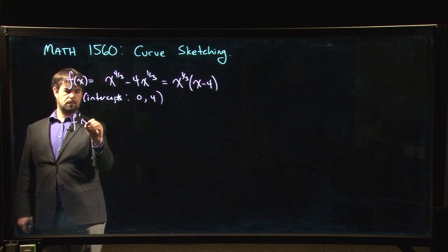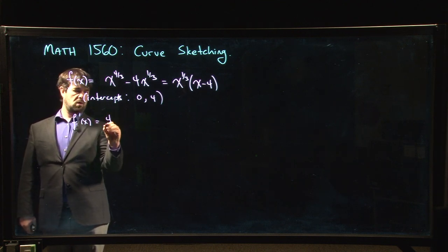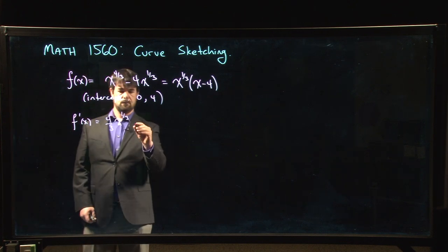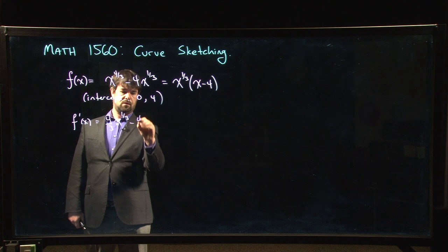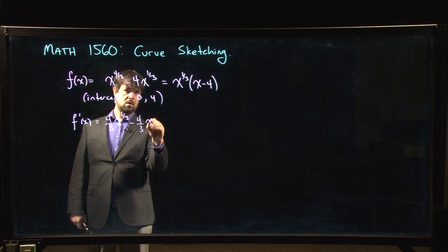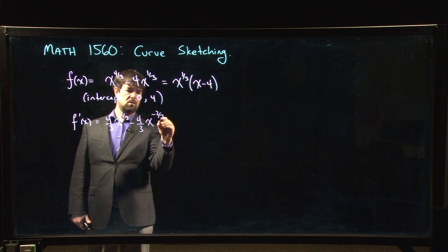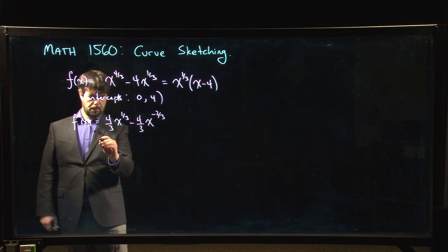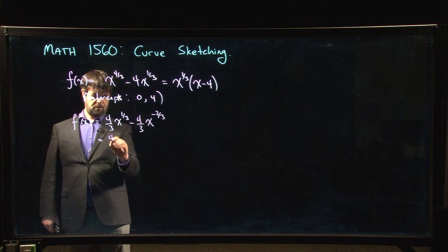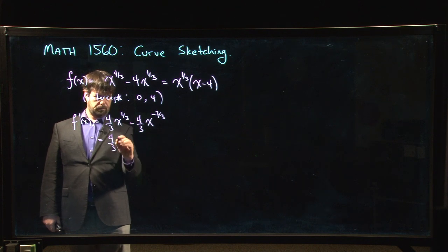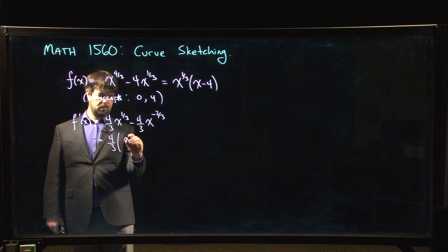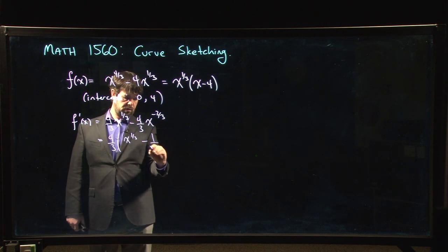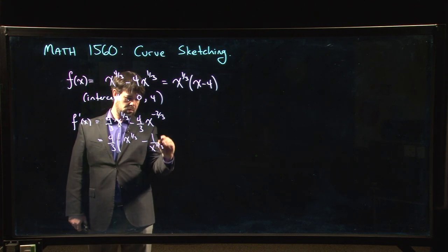All right, first derivative. We get 4 over 3 x to the 1 over 3 minus 4 over 3 x to the minus 2 over 3. Okay, so let's factor out the 4 thirds and then I have x to the 1 third minus 1 over x to the 2 thirds.